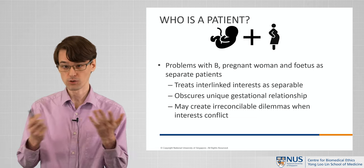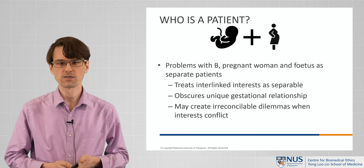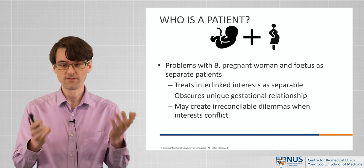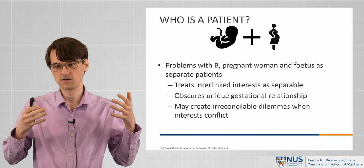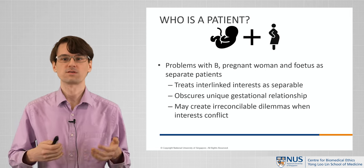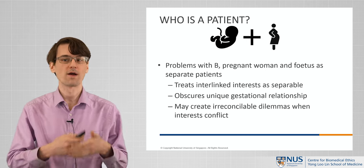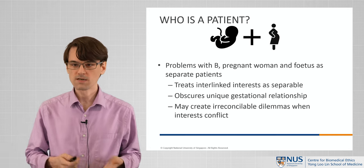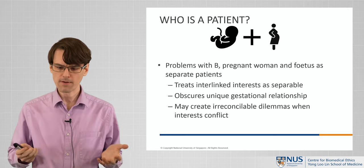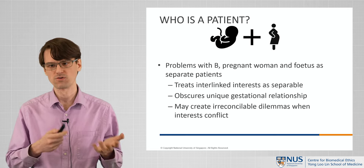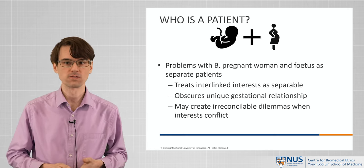So maybe we should treat this as there being two patients — the pregnant woman and the fetus. But one of the challenges with this two-patient model is that it treats these two individuals as separable, as two distinct people, even though their interests are deeply intertwined. The interests of the fetus and the mother cannot be easily separated in these contexts. Indeed, it obscures the unique gestational relationship that occurs in pregnancy, and also sets up a potential dilemma — a trade-off between the interests of two different patients that might create challenges in determining how to proceed in cases where their interests conflict.